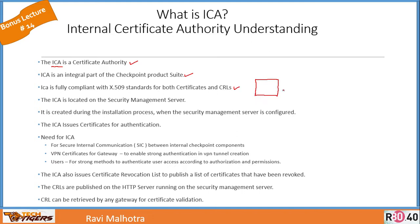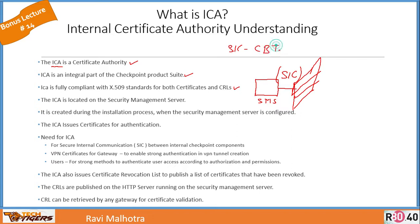If you recall the topic of the three-tier architecture, we have one SmartCenter server and a firewall, and you establish a trust between them. This trust is called SIC, which is a certificate-based trust, and the certificate is generated by the ICA. ICA is fully compliant with x.509, which is the standard for certificates. ICA is actually located on the Security Management Server itself — there is an HTTP server which acts as a certificate authority server, and this ICA server is created during the installation process of the Security Management Server.